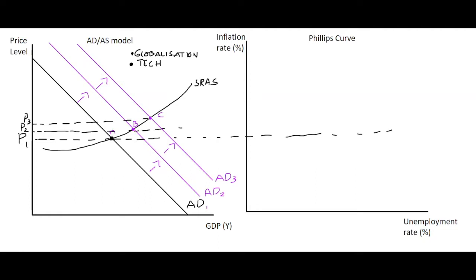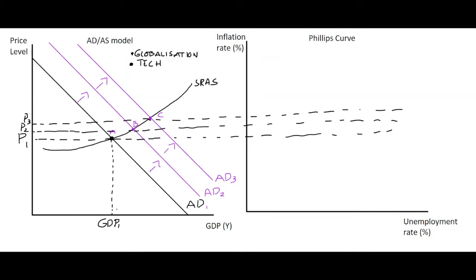Looking at our short-run Phillips curve over here, what we will see is the impact on our Phillips curve is actually quite small. If we say that in the aggregate demand–aggregate supply model, P1 — our first equilibrium point — denotes GDP1, we could say that that's associated with a natural rate of unemployment, Un.